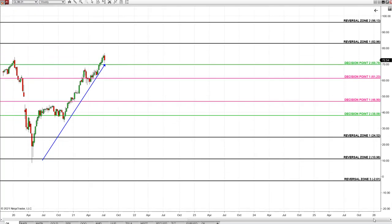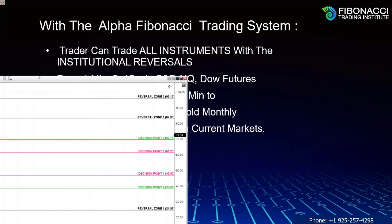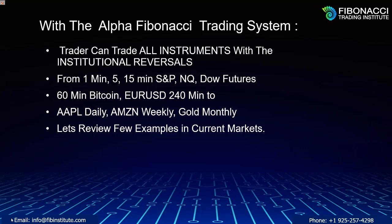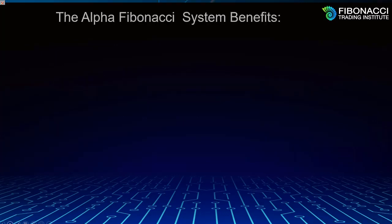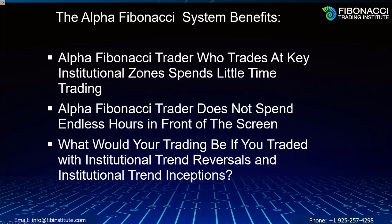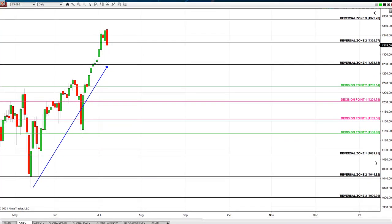And that's S&P, Bitcoin, oil, and Apple with the Alpha Fibonacci system during the crisis and since 2015. An intelligent trader who trades at key institutional zones spends very little time trading and does not spend endless hours in front of the screen. So what would your trading be like if you knew this morning — if you knew many days in advance — that this is an institutional buy point?